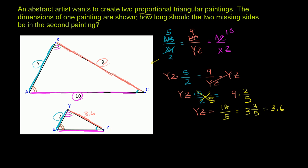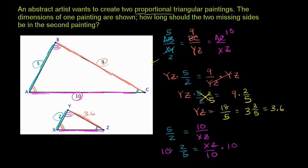Now we need to find XZ. We know that 5/2 equals 10 over XZ. We can flip both sides to get 2/5 equals XZ over 10, then multiply both sides by 10. That gives XZ equals 10 times 2 over 5, which is 20 divided by 5, so XZ equals 4.